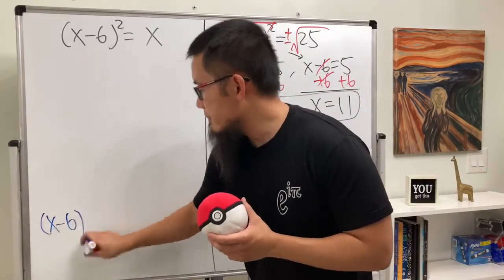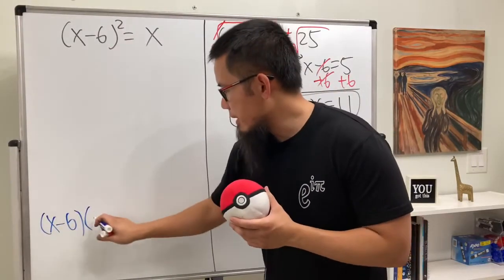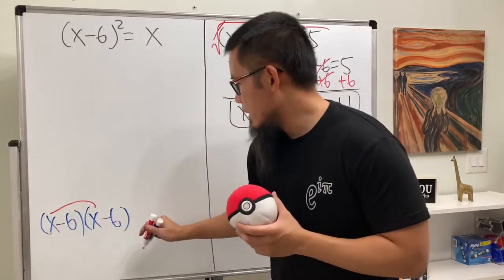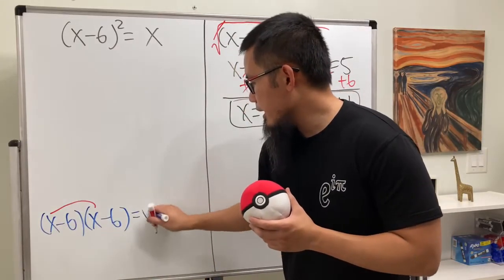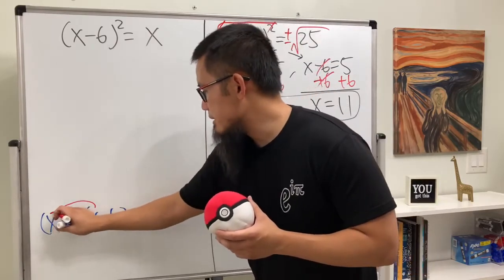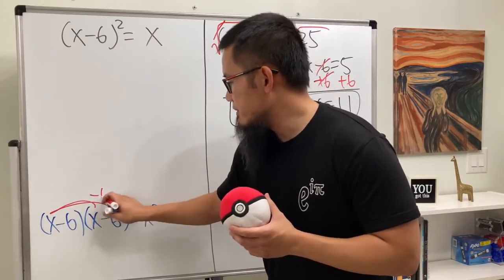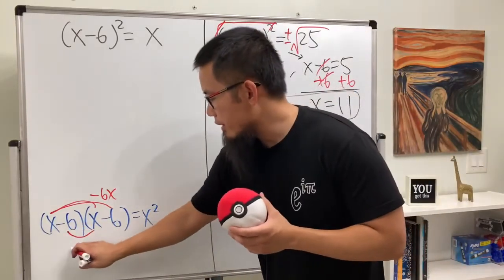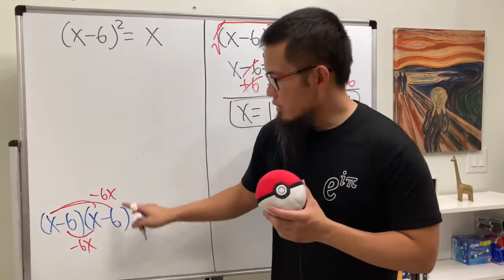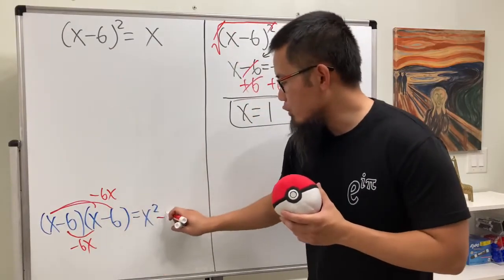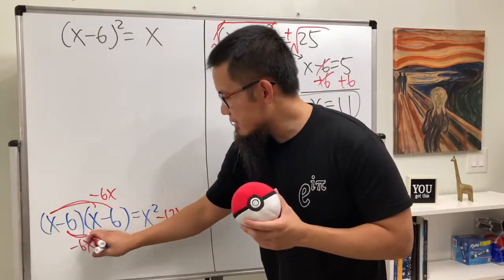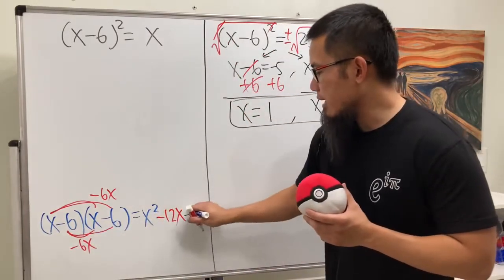So, x minus 6 squared means we do x minus 6 times x minus 6. So, you see, this times this gives us x squared. And then, this times this gives us negative 6x. Then, we just put it down on the top. And you see another one, negative 6x. So, together, we combine that. We get negative 12x. And then, lastly, negative 6 times negative 6 will give us plus 36.